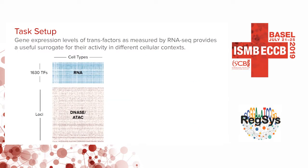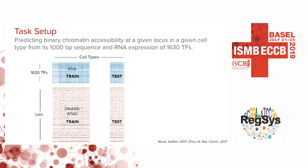If we add an extra modality such as RNA expression, which provides a useful surrogate for trans factor activity, we can split the matrix in more interesting ways — holding out entire cell types in the test set. This means we can predict genome-wide chromatin accessibility profiles for cellular contexts not seen during training. This formulation was previously used by Anouk in a bioRxiv paper and by Zhao in a Nature Communications paper.